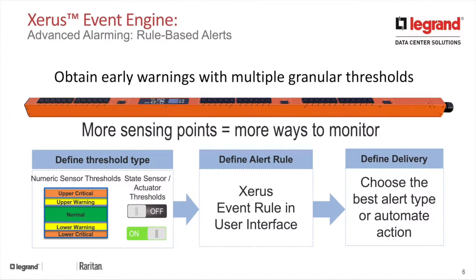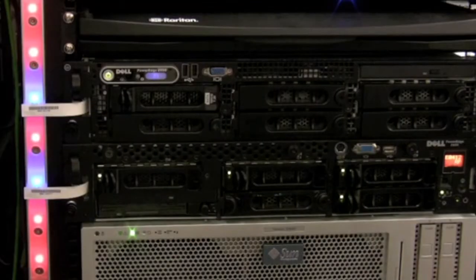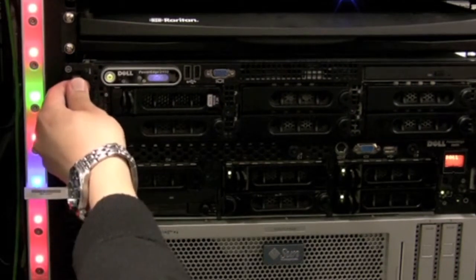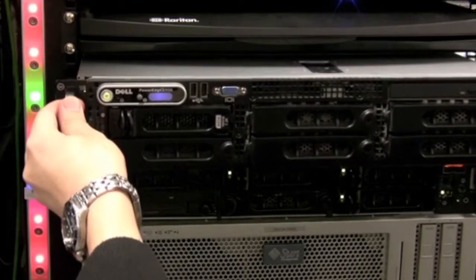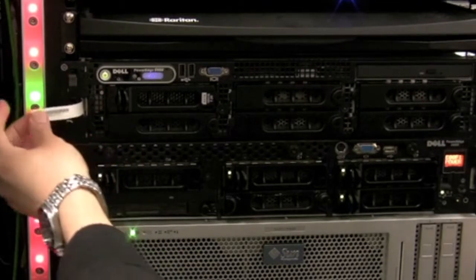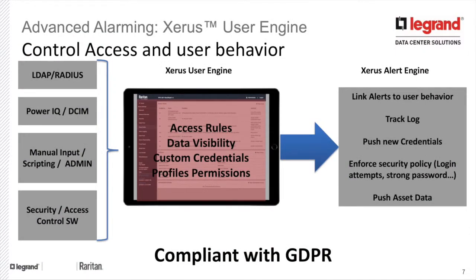Xerus has a powerful event engine. Based on many different types of events, an action can be created. You could have an event like door open, asset removed, or asset connected. Based on these events, there can be a series of actions like notifying somebody via email or sending an SNMP trap to a DCIM system. You can highly customize the Xerus platform and have complex rules to fit your requirements.